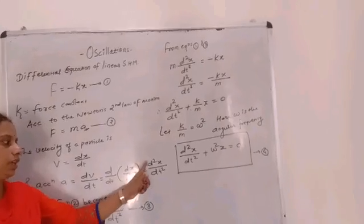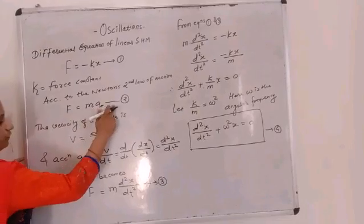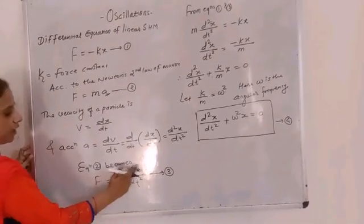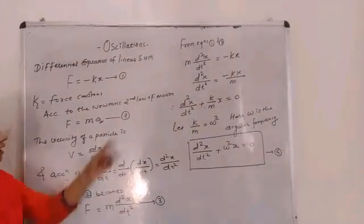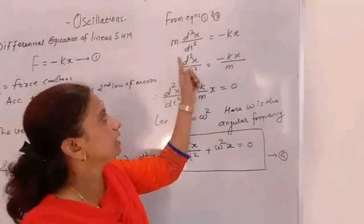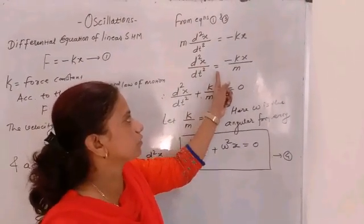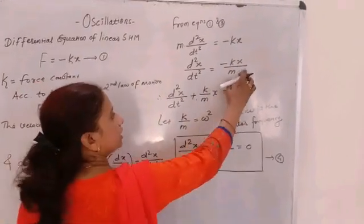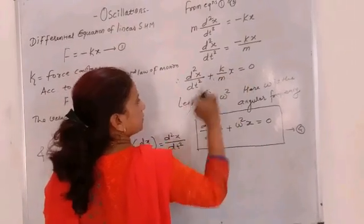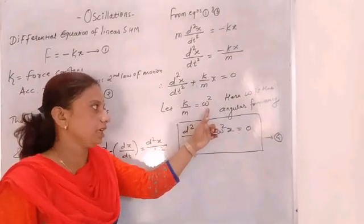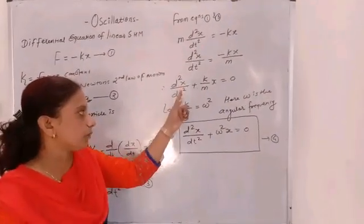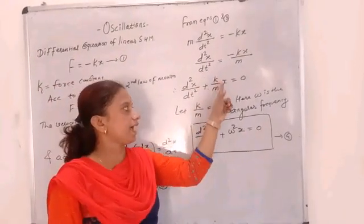Acceleration a equals d²x/dt². Putting this value in equation 2, equation 2 becomes F equals M times d²x/dt² — this is equation 3. Equating equations 1 and 3, d²x/dt² equals minus Kx/M. So d²x/dt² plus K/M times x equals 0. Let K/M equal omega squared, where omega is the angular frequency. So our differential equation becomes d²x/dt² plus omega squared times x equals 0.